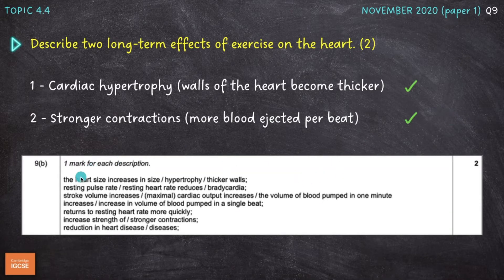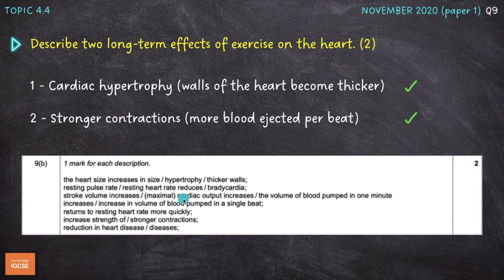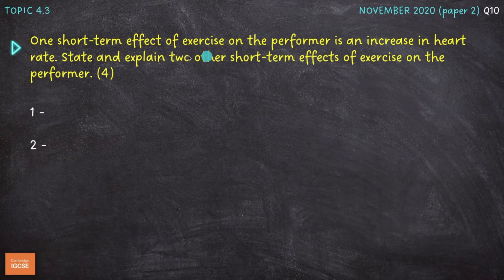Let's have a look at the mark scheme — it's the same mark scheme every time, so please put some time into learning this one. Points include: a reduction in heart disease, an increase in strength or stronger contractions of the heart, the heart returns to resting heart rate more quickly, an increase in stroke volume, an increase in cardiac output, a reduced resting pulse rate otherwise known as bradycardia — a resting heart rate below 60 beats per minute — and heart size increases or hypertrophy. Learn this mark scheme; you'll pick up lots of easy marks.